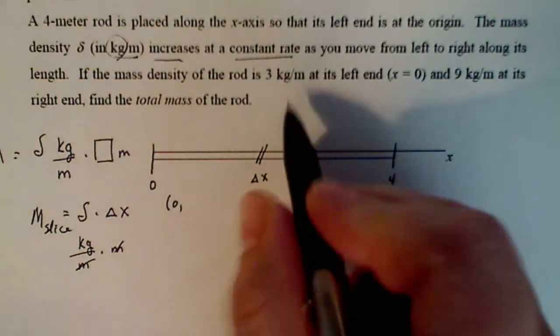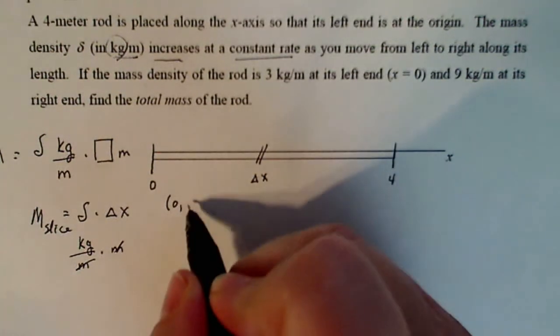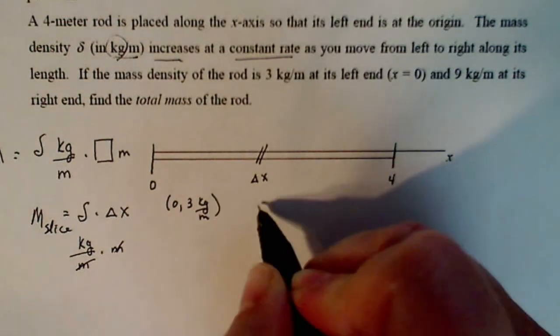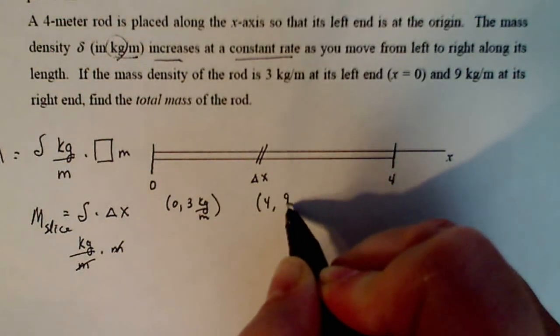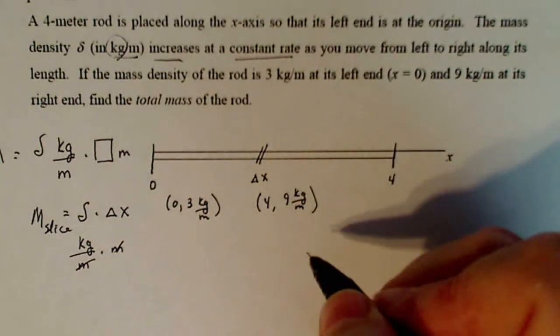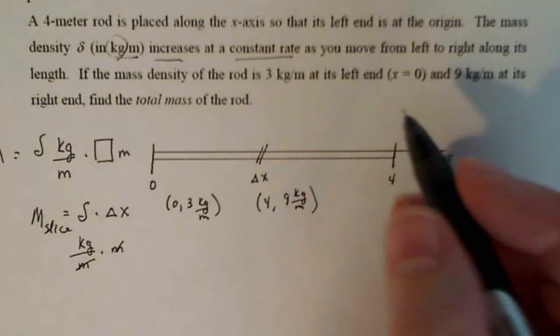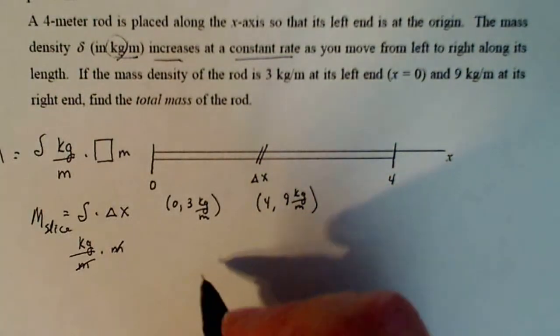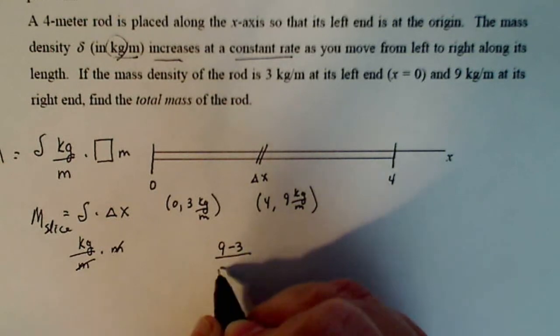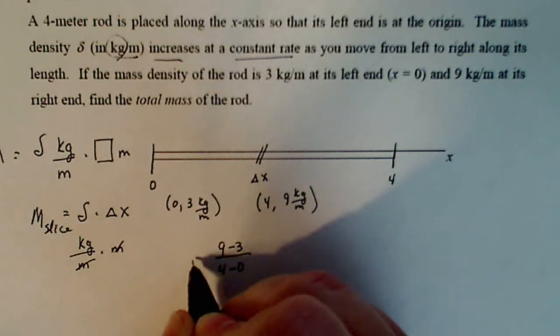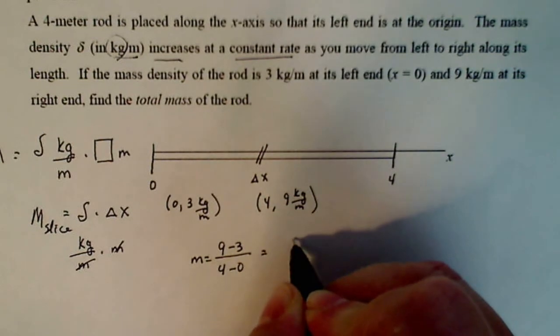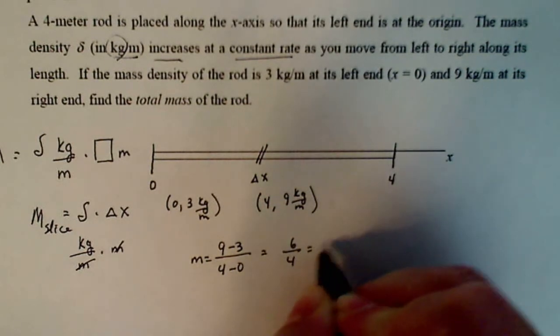They give us two bits of information to calculate that linear function. At zero, my density is three kilograms per meter, and at four, the density is nine kilograms per meter. We just have to find the equation of the line that goes through those points. The change in output over the change in input is my slope, six over four, which is three halves.